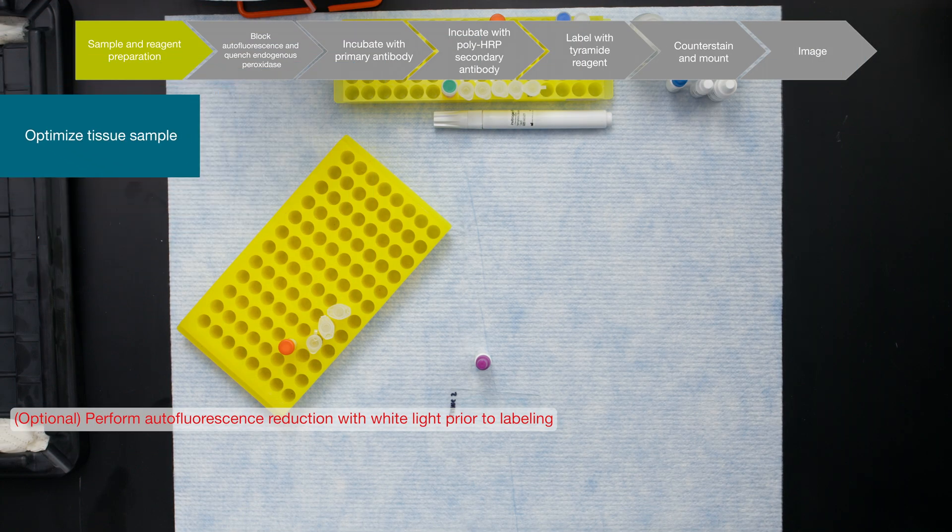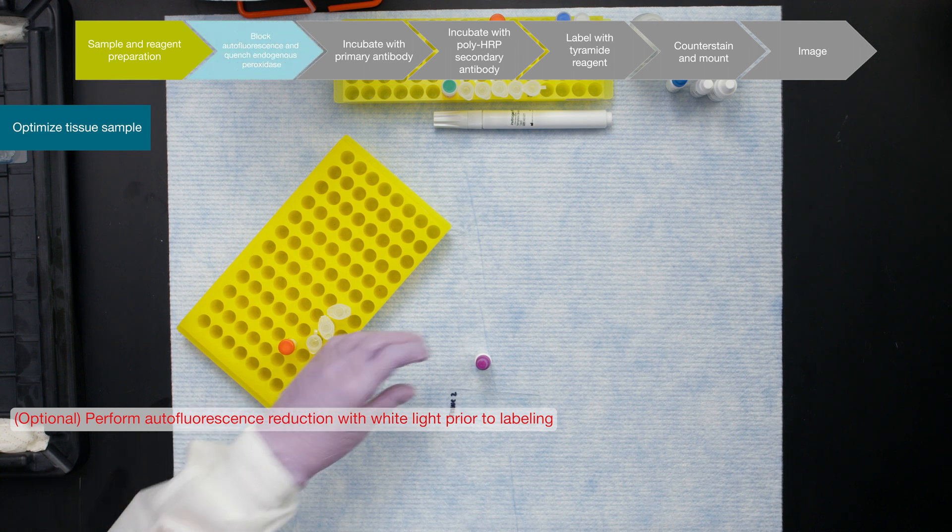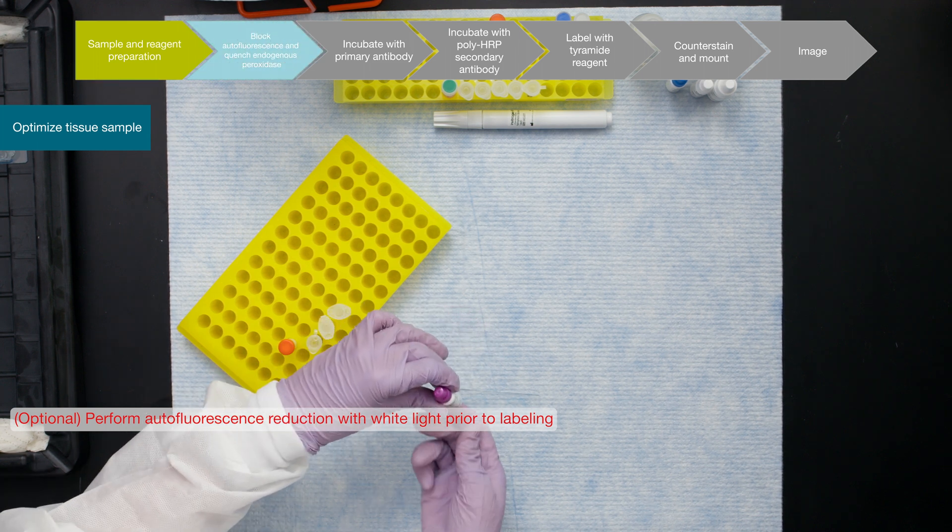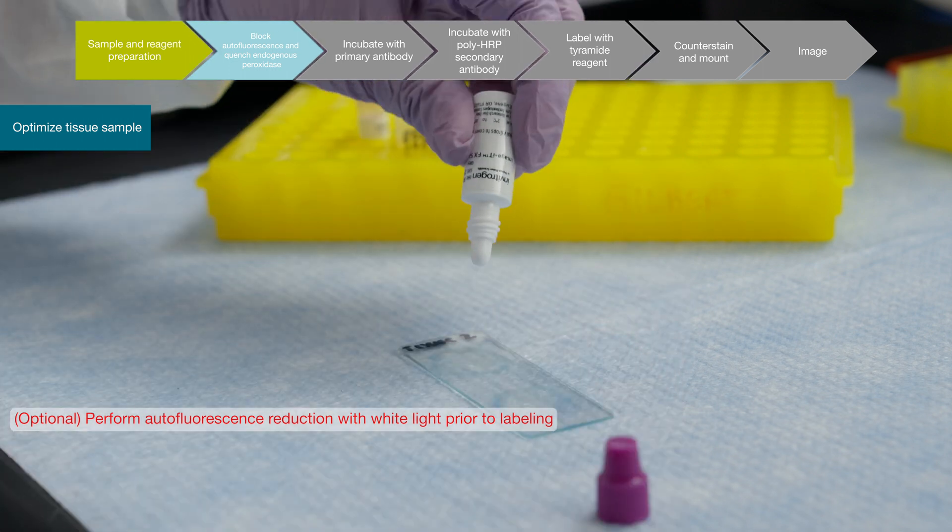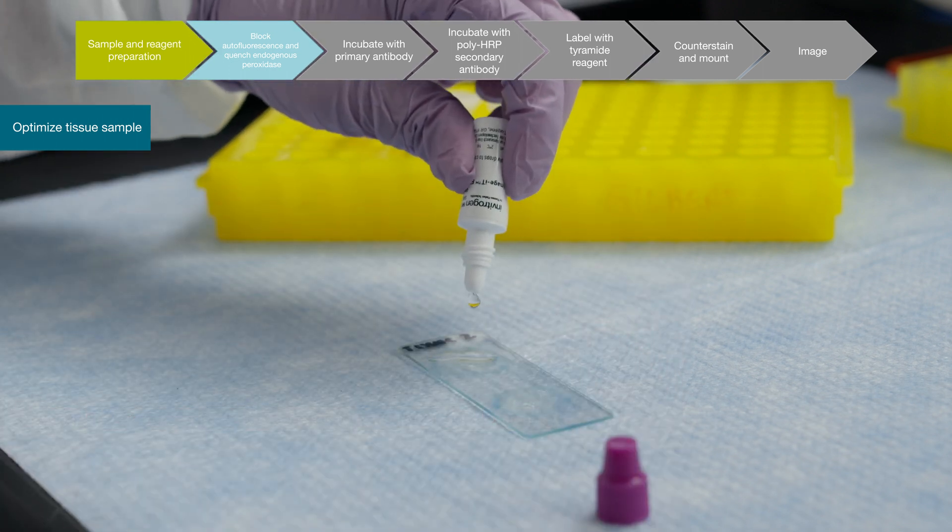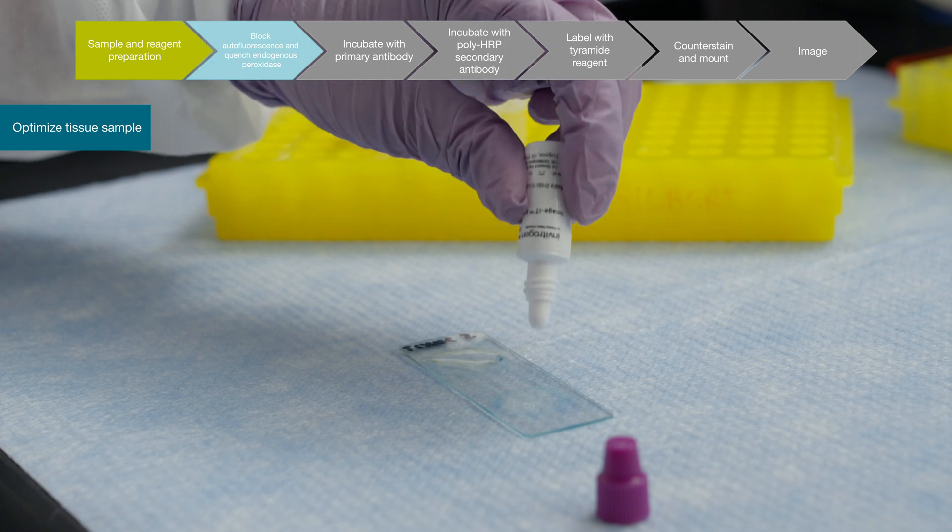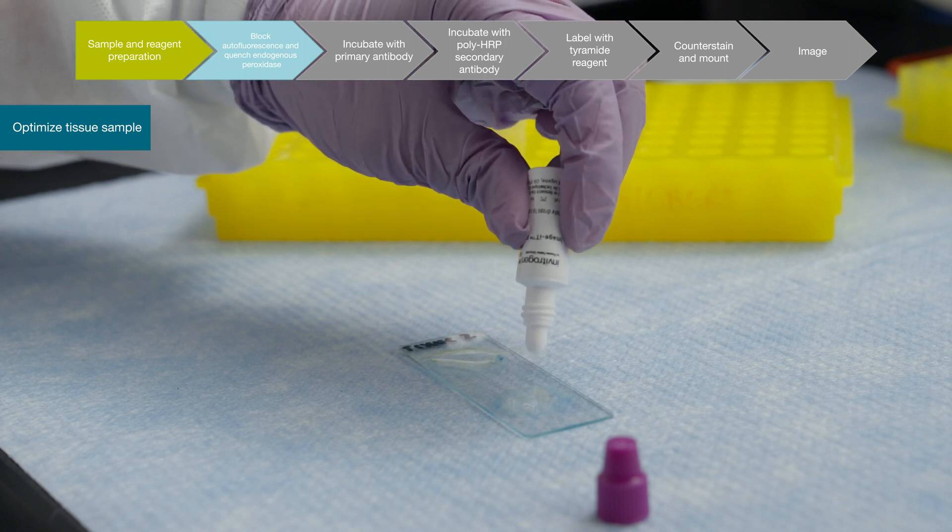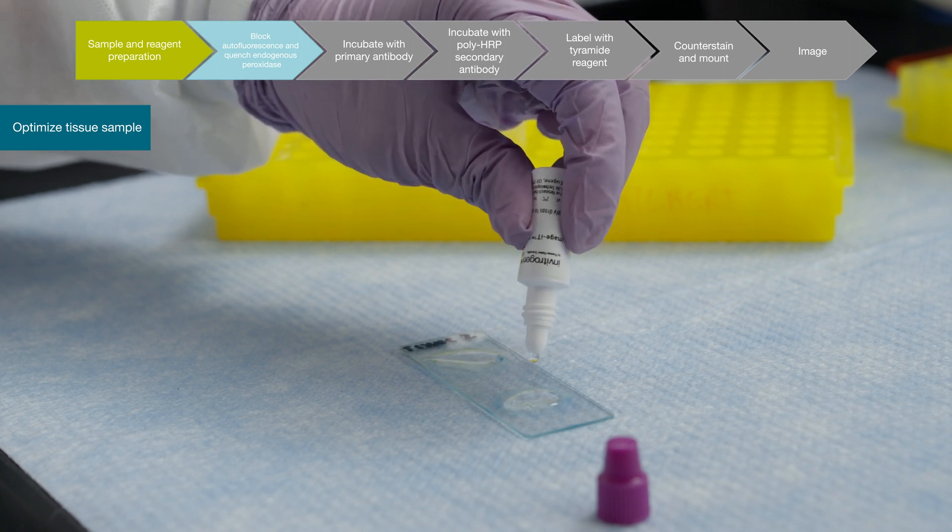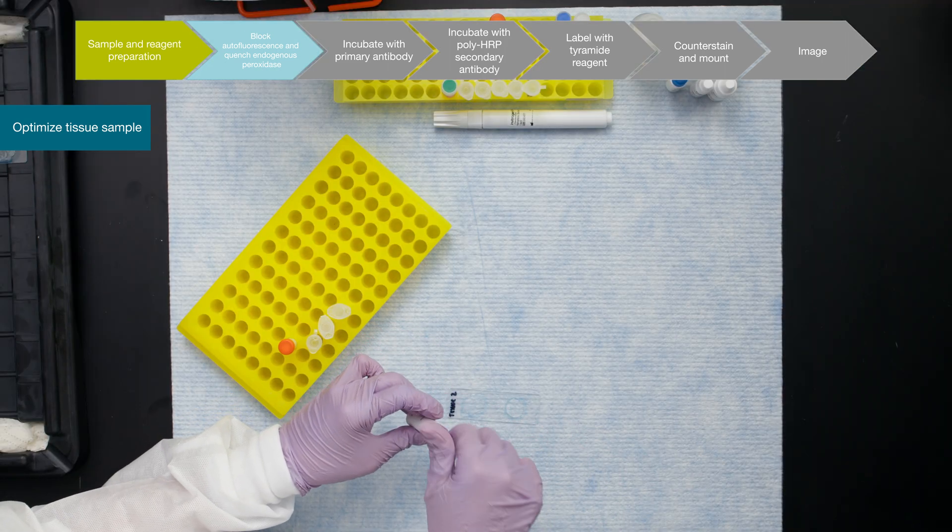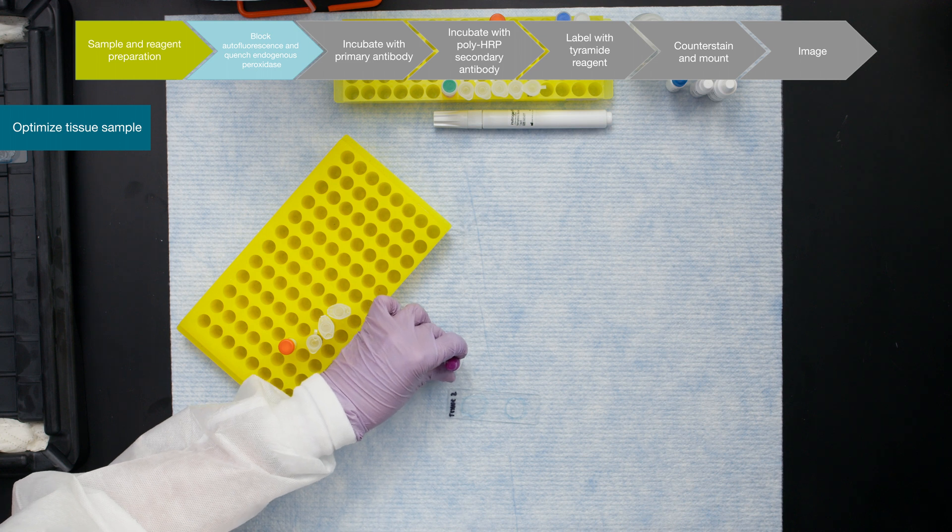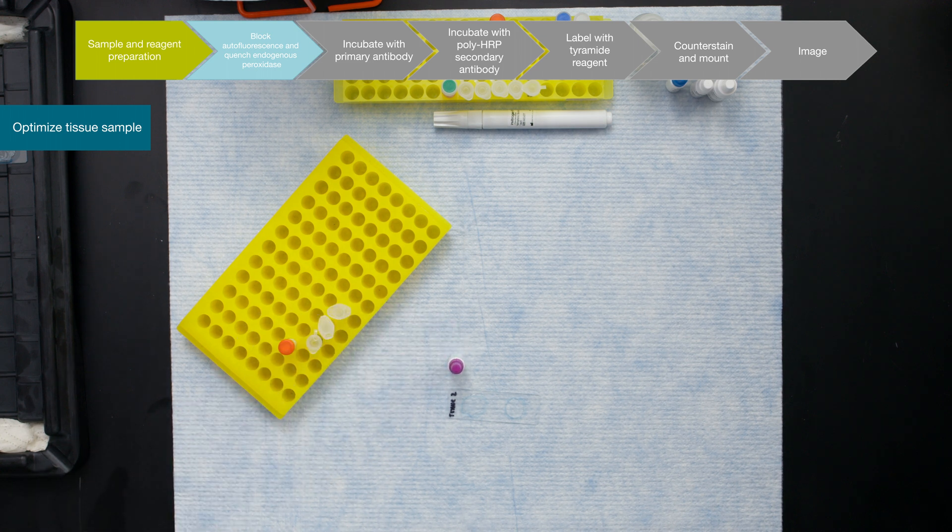Tissue samples may have autofluorescence. Exposing tissue to white light prior to labeling is a simple step to reduce endogenous autofluorescence. Non-specific fluorescence, or background, can also come from the application of fluorescent conjugates of streptavidin, goat anti-mouse, or goat anti-rabbit IgG. Adding four drops of ImageIt FX signal enhancer reduces non-specific dye binding to the tissue sample.